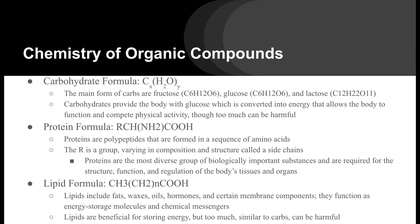Though too much carbohydrates without any other nutrients can be harmful. The protein formula is RCH with nitrogen, hydrogen, carbon, and oxygen. Proteins are polypeptides formed in a sequence of amino acids. The R is a group varying in composition and structure called side chains. Proteins are the most diverse group of biologically important substances and are required for the structure, function, and regulation of the body's tissues and organs.